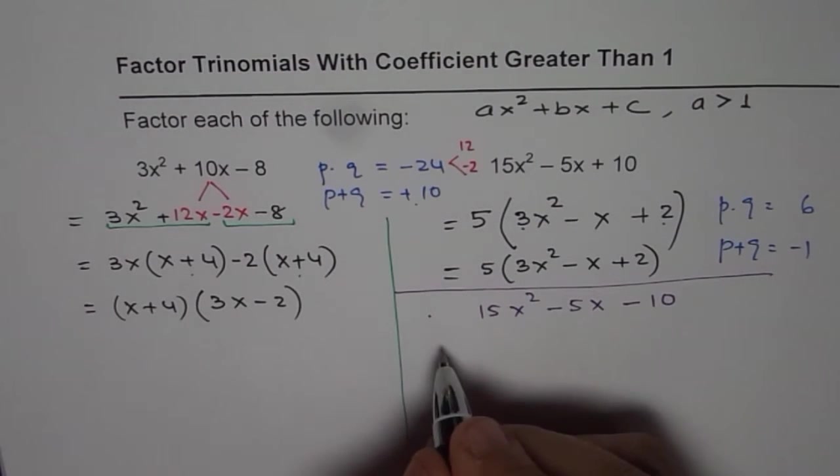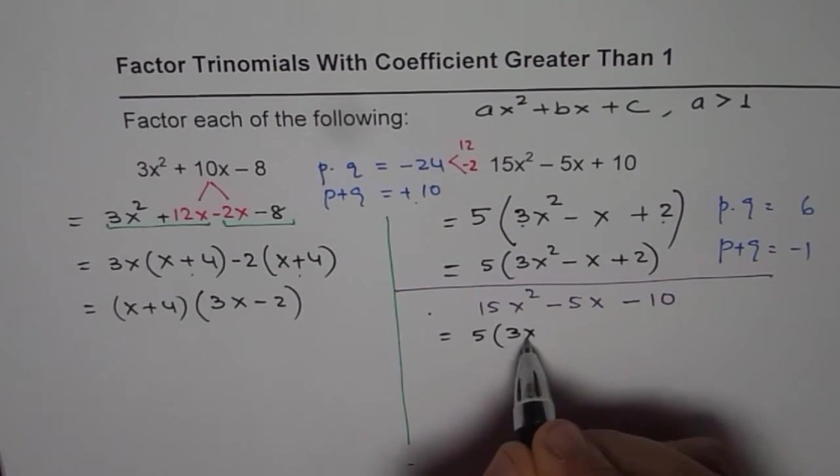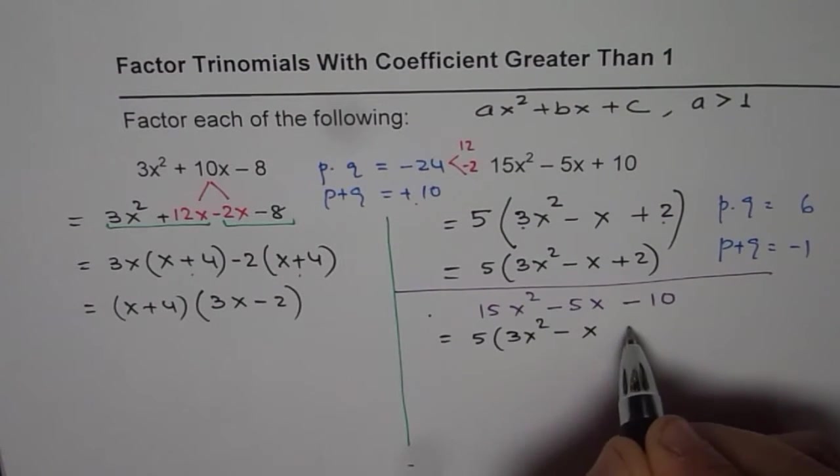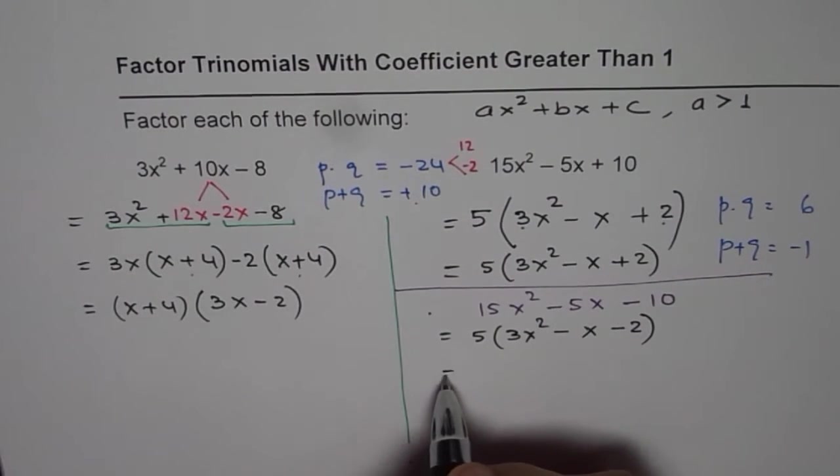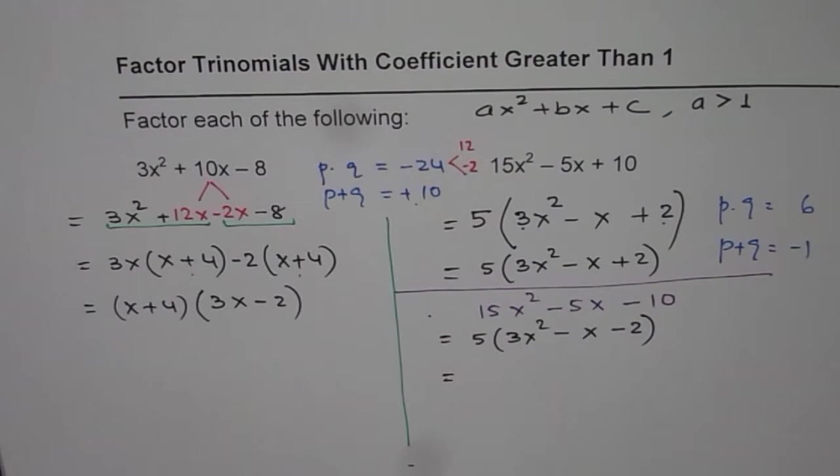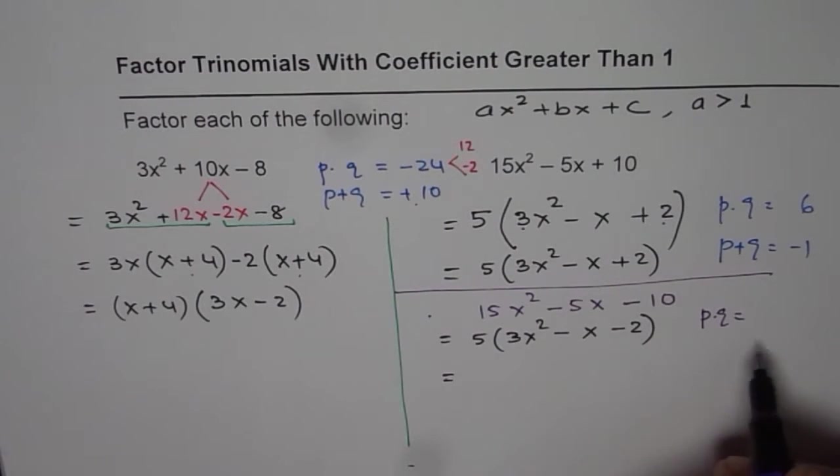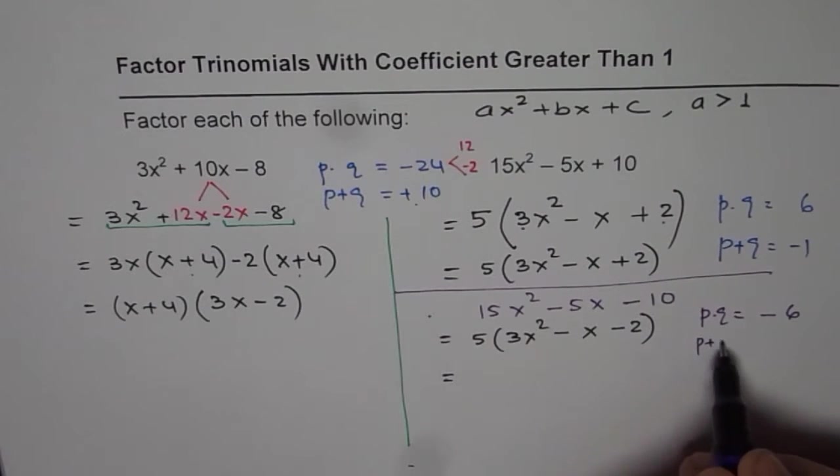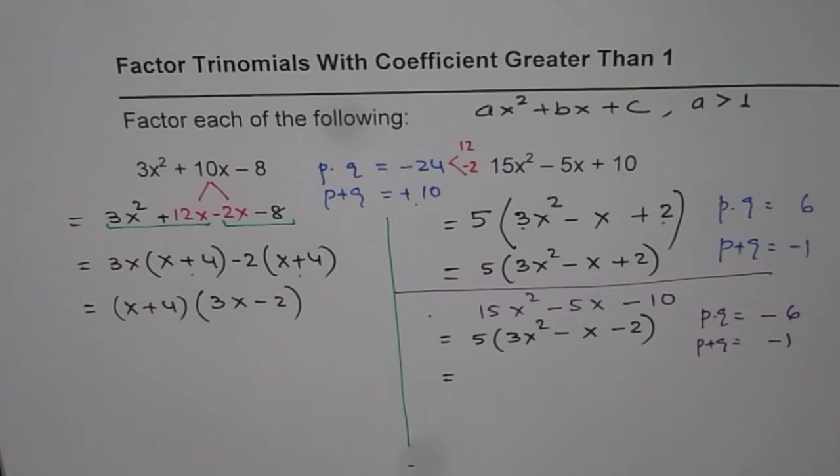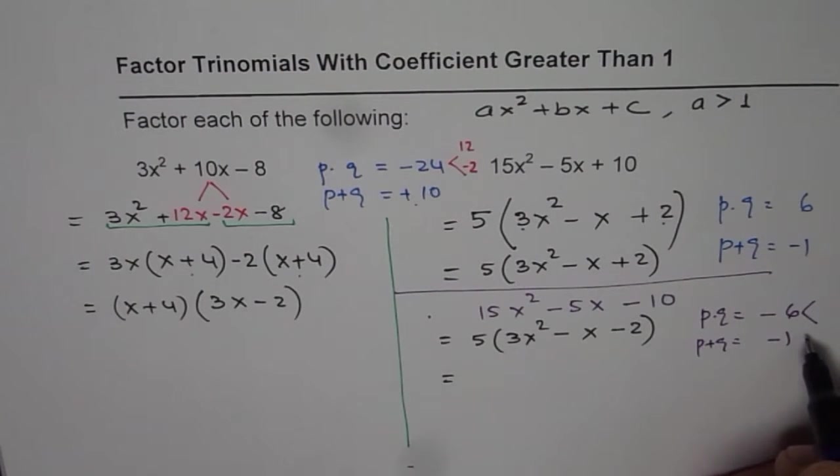The first step is common which is we will factor out 5. So we get 3x² - x and here we get -2. Now we are looking for product and sum. In this case the product should be 3 times -2 which is -6. And sum should be p + q should be equal to -1.